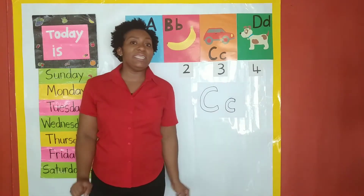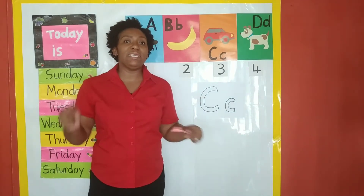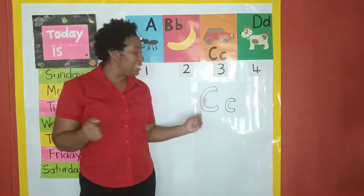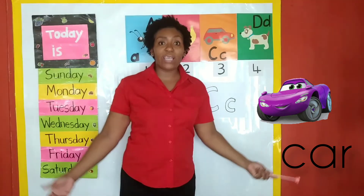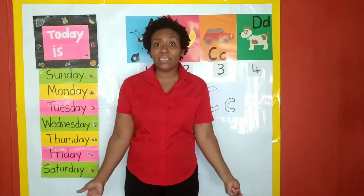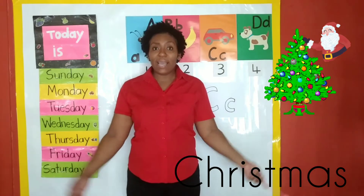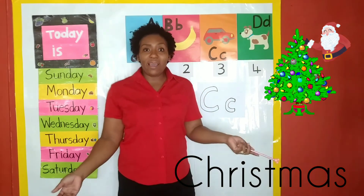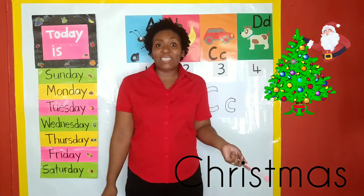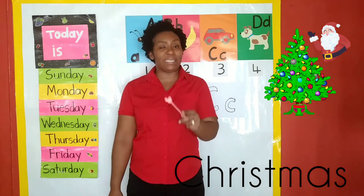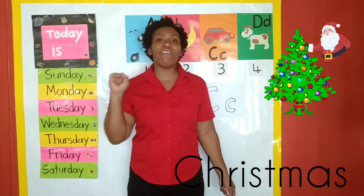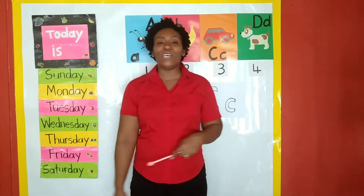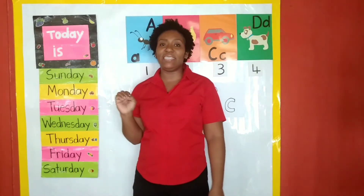The C says K. Every letter makes a sound. The C says K. C for car. C for carrot. C for cake. C for candles. C for Christmas. And guess what? Christmas is coming up in the month of December. C is for Christmas — the season of good cheer. So we are doing letter C: C for Christmas, C for car. Letter C is the letter of the week.